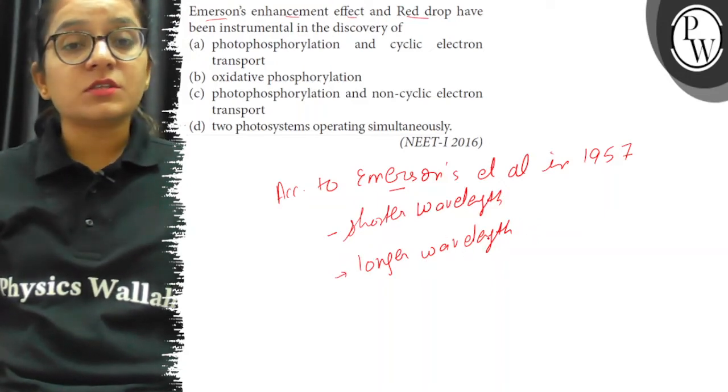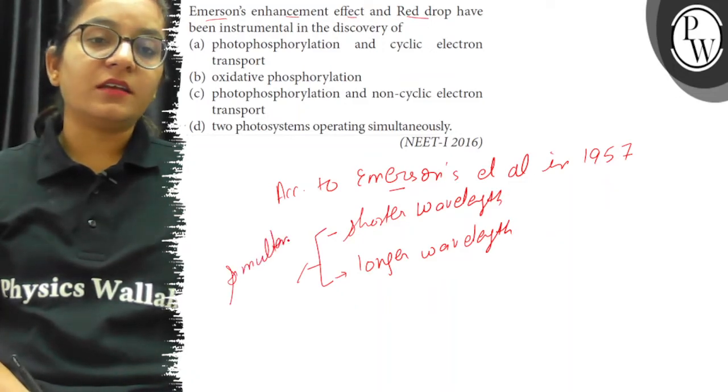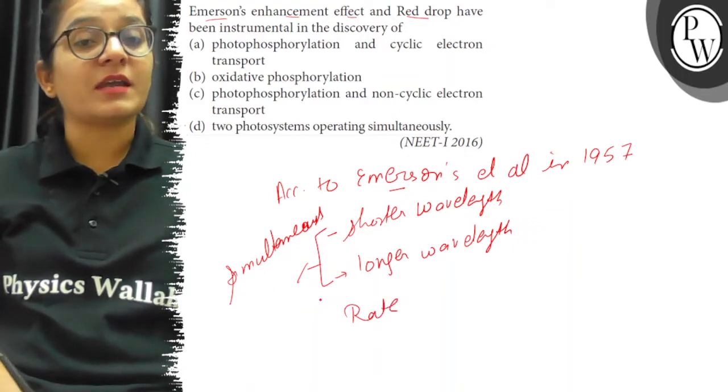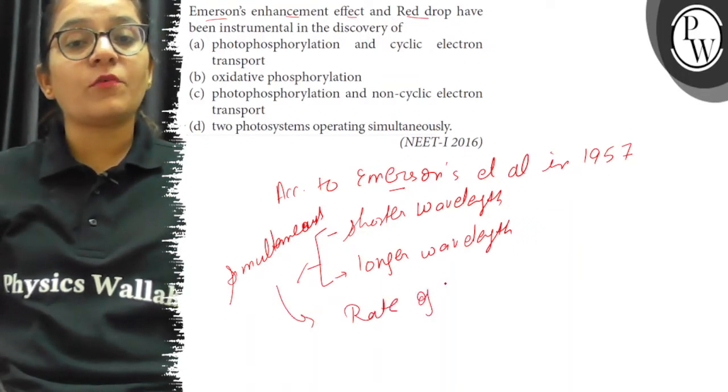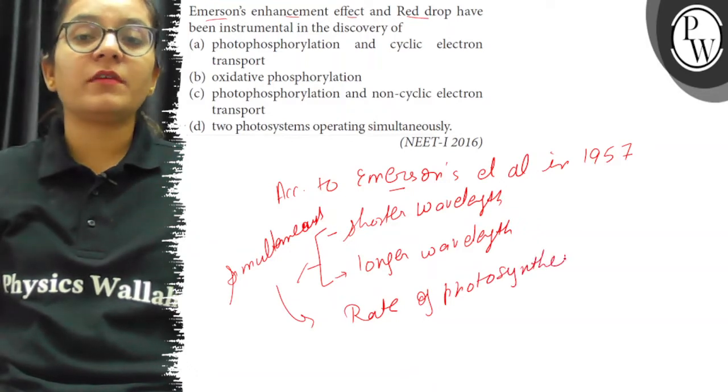But when both of them are given simultaneously, the rate of photosynthesis is much higher than with the individual wavelengths of light.